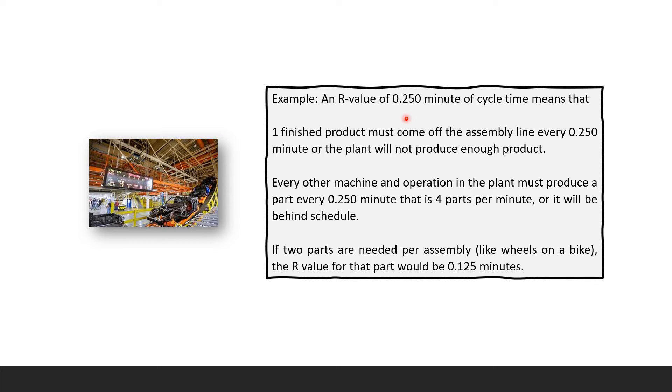Another example for R-value: an R-value of 0.250 minute cycle time means one finished product must come off the assembly line every 0.250 minute or the plant will not produce enough product.